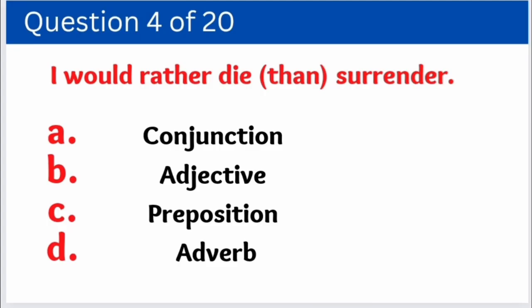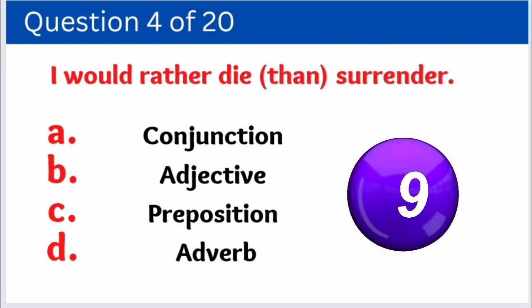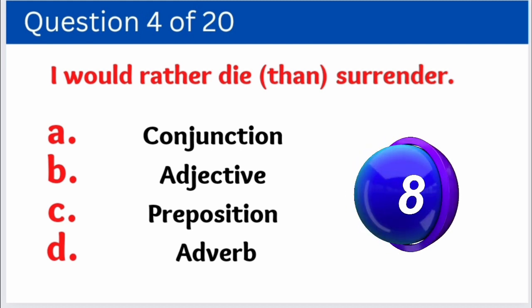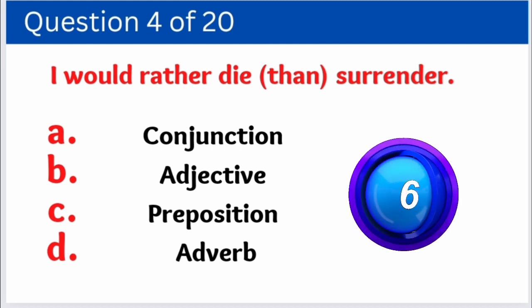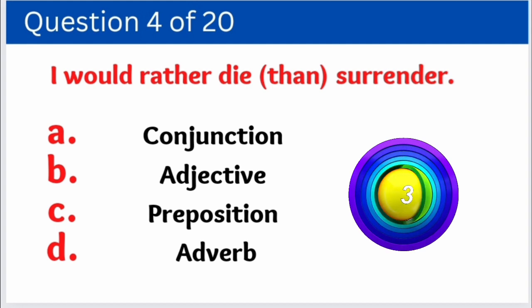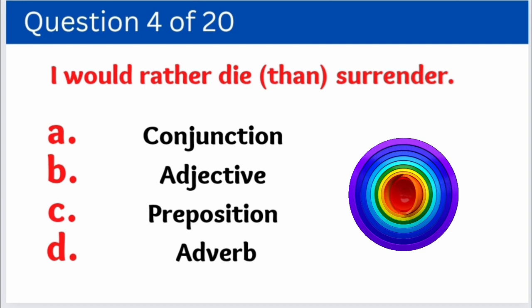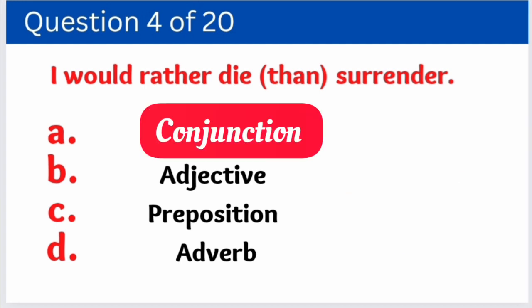Question number four is: 'I would rather die than surrender.' We have to identify how 'than' is used as which part of speech. Options are: A. Conjunction, B. Adjective, C. Preposition, D. Adverb. And the correct answer is option A — Conjunction.